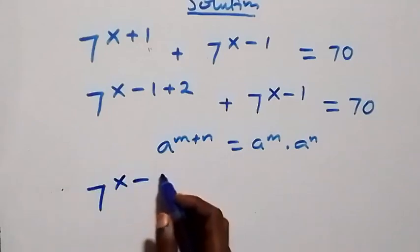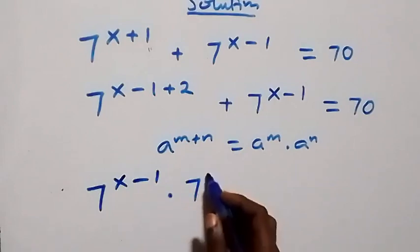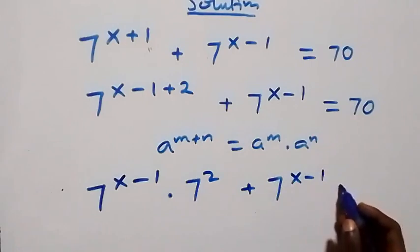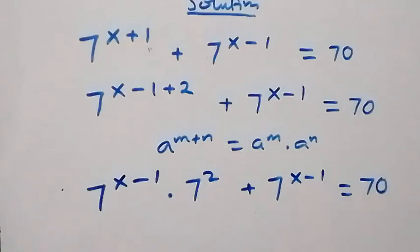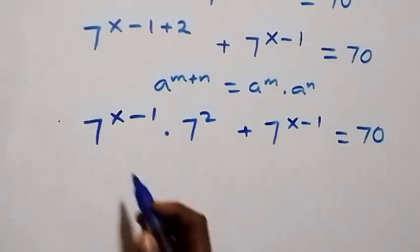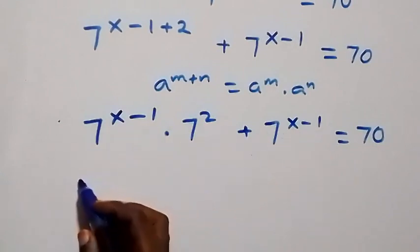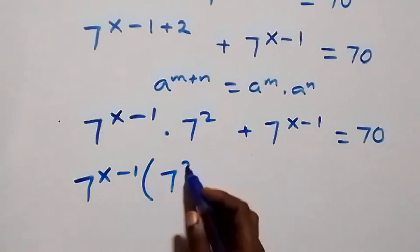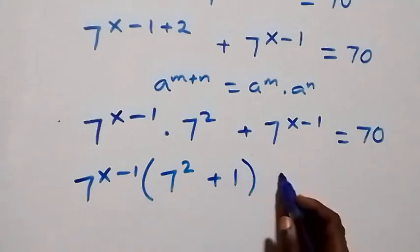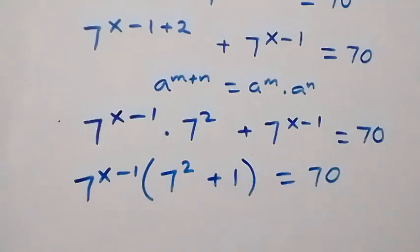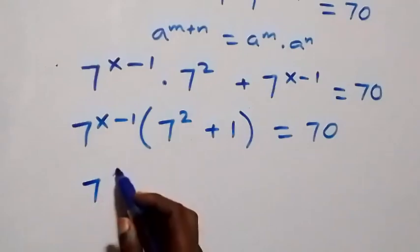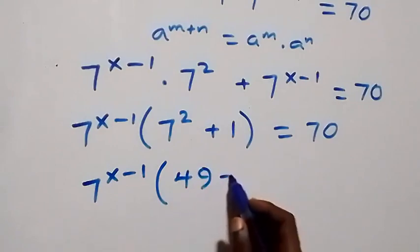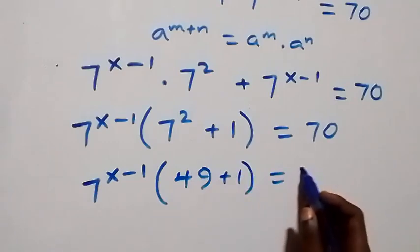Seven raised to power x minus one, times seven squared, then plus seven raised to power x minus one, equals to 70. From here, seven raised to power x minus one is common, so we factor that out: seven raised to power x minus one, into bracket seven squared plus one, equals to 70. Seven squared is 49, so we have seven raised to power x minus one into bracket 49 plus one, equals to 70.